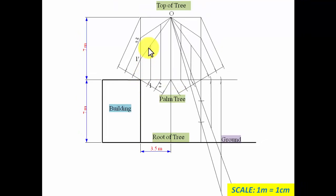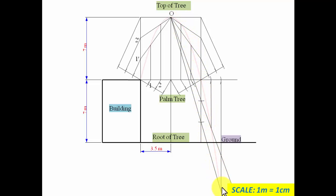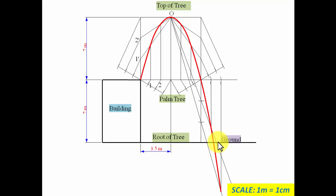Now I'm going to join all these points in proper sequence with the help of a smooth curve — all these points in sequence with the help of a smooth curve — and this is what we're going to achieve. I'm assuming the stone is not going to go inside the ground, so I'm going to be chopping off that portion.